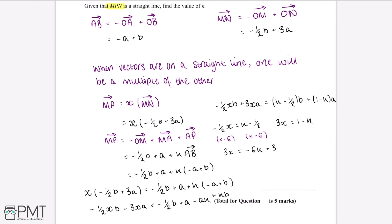We put the two equations equal to each other: 1 minus K equals negative 6K plus 3. Rearranging this equation to make K the subject gives us K equals 2 over 5, and this is our final answer.